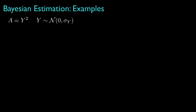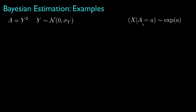For another example, let's suppose that the unknown random parameter is modeled as the square of a Gaussian random variable with zero mean and standard deviation sigma_y. Then, conditional on a, the observation x is an exponential random variable with a mean equal to the value that a takes.